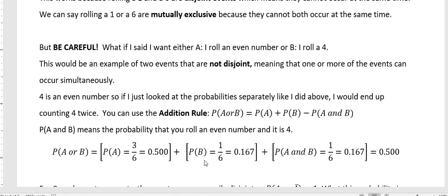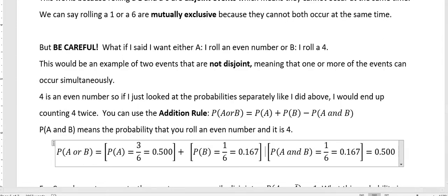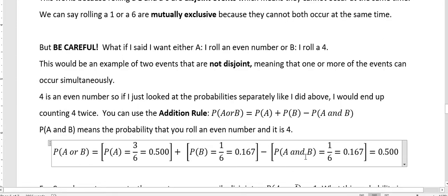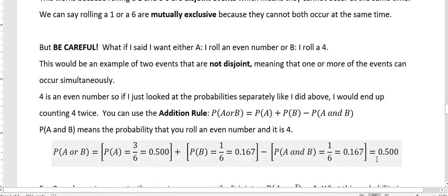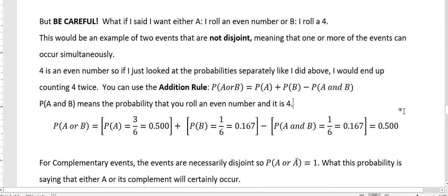The probability of B, which is rolling a four, one in six chance. And then the probability of rolling an even number that is a four, and there's one in six chance of that. And so this should be subtraction right here, because we're subtracting off that part that is an overlap. So you can see that our final probability is just half, because four is already represented in that even number thing. So we would still have a probability of 0.500 when we looked at that.